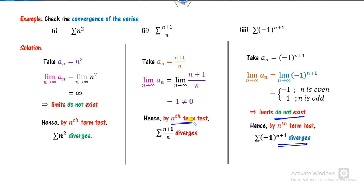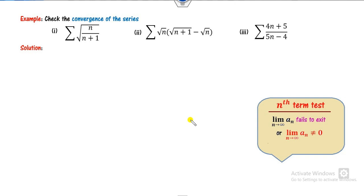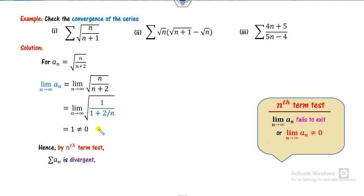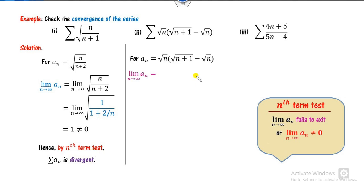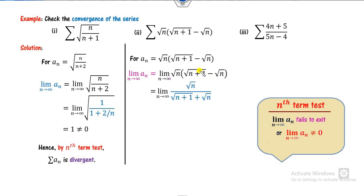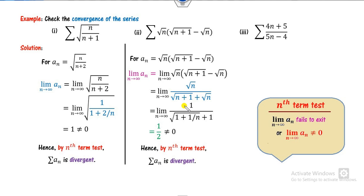For the fourth example, the term can be written as (1 + 2/n), so the limit as n approaches infinity is 1, which is non-zero — again a divergent series. For the fifth example, taking the limit directly gives infinity minus infinity, which is undefined. We rationalize the expression; after rationalization, dividing both sides by n√n, the result is 1/2, which is non-zero. So the nth term test gives divergence.